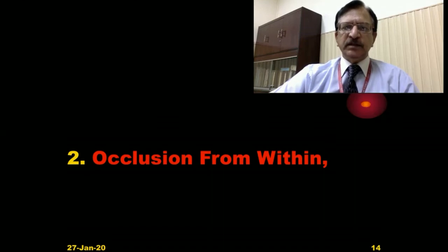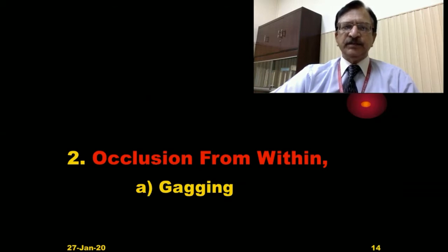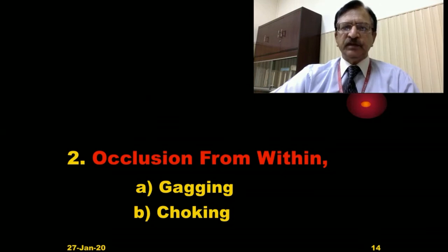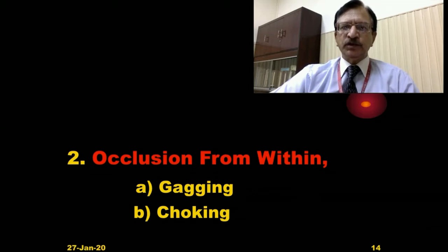Occlusion from within occurs when objects are in the lumen. Gagging is when something is introduced into the respiratory orifices — a small piece of cloth or handkerchief introduced into the mouth or behind the nose. Choking occurs when a hard material such as a pebble, a coin, a small piece of bone, or a bolus of food enters the respiratory passage. In choking, the size of the object does not matter because it initiates a reflex and causes occlusion.